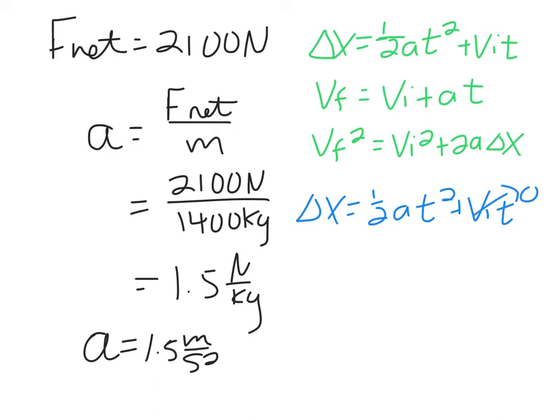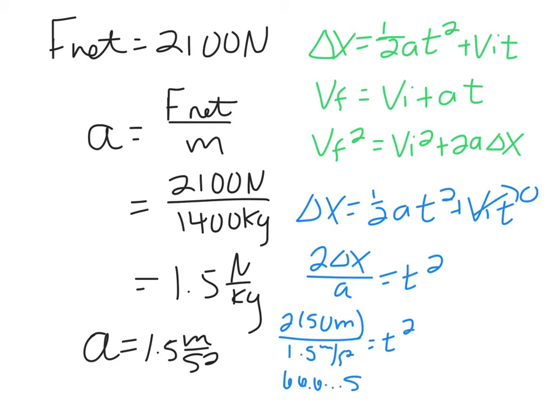My v initial was zero. That term goes away. Isolating for t, 2 delta x over a equals t squared. 2 times 50 meters divided by 1.5 meters per second squared equals t squared. So 100 divided by 1.5 gives me 66.6 repeating, units with that are seconds squared equaling t squared. Square root of 66.6 repeating, we get 8.16 seconds for time. One sig fig, t is about 8 seconds.